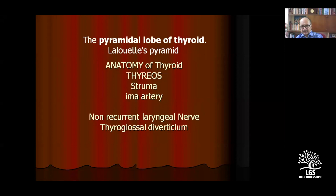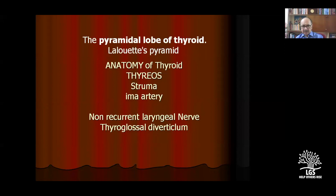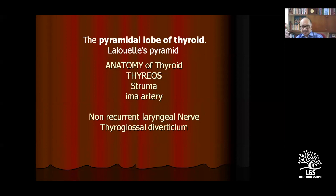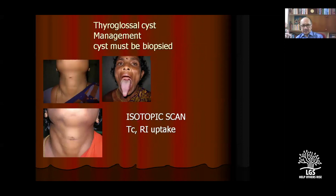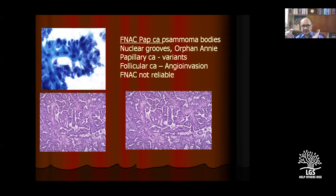Non-recurrent laryngeal nerve — when do you get it? Due to abnormal development of the aortic arches in the growing infant, you get the recurrent laryngeal nerve developing from the right side directly from the aorta, so it doesn't require looping. The take-home message on thyroglossal cyst: manage it surgically and send the specimen for biopsy, because 2 to 3% of thyroglossal cysts can have papillary carcinoma. The best investigation for papillary carcinoma is FNAC — showing psammoma bodies, nuclear grooves, and orphan Annie nuclei.